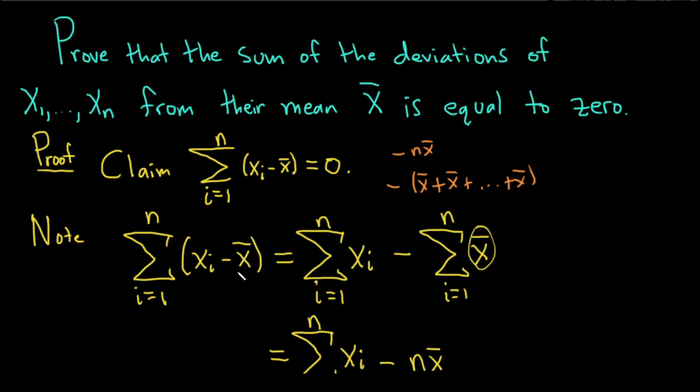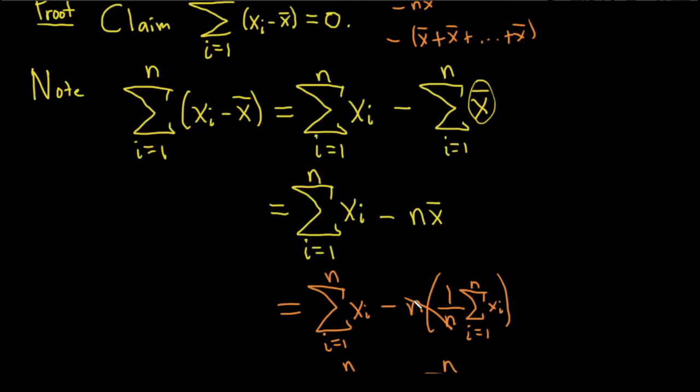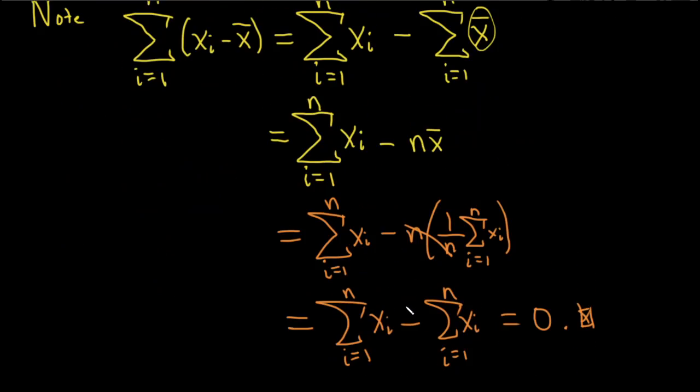you're taking each data point and subtracting the mean. So it's like x1 minus the mean plus x2 minus the mean plus x3 minus the mean. So if you do that for every single x in your data set, you're actually going to get 0. Kind of an interesting result.